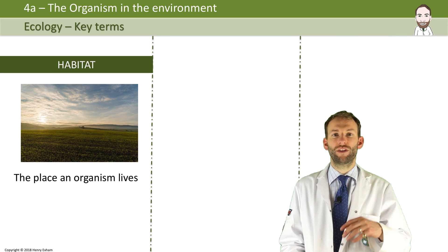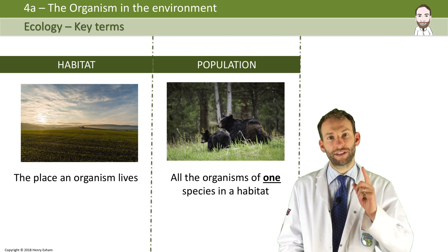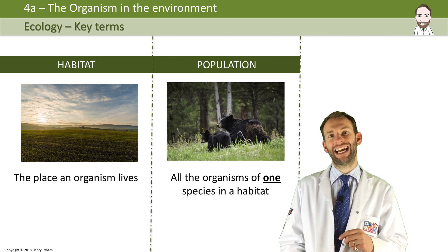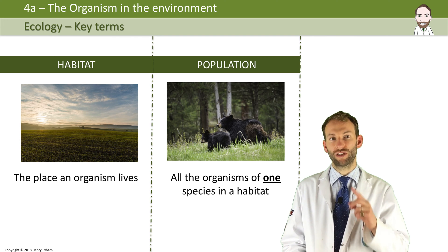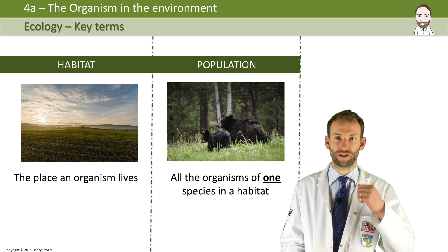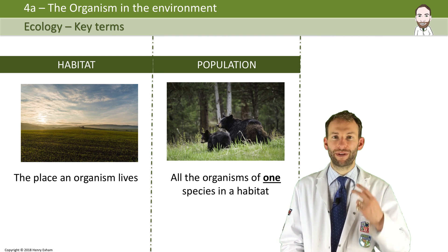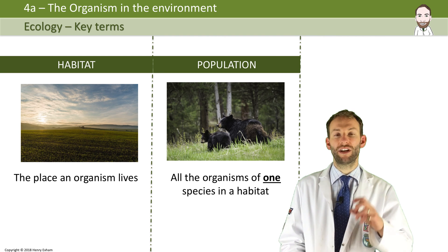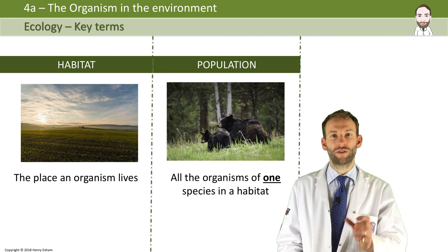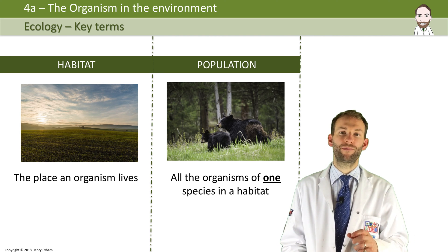Population. The population is all the organisms of one species in a habitat — just the one species. So you might have a population of ladybirds and a population of oak trees and a population of caterpillars. Each species is a population.